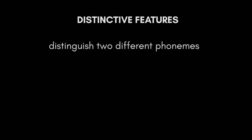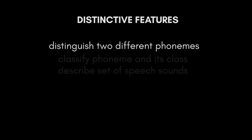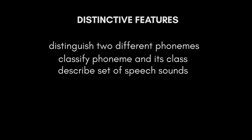A distinctive feature is a feature of the sound system of a language that serves as a crucial distinguishing mark between two phonemes. For example, the distinctive feature of voicing distinguishes b from p in English. The uses of distinctive features are to specify a phoneme in its class and to describe the set of speech sounds used in a particular language or dialect.